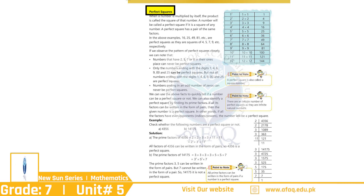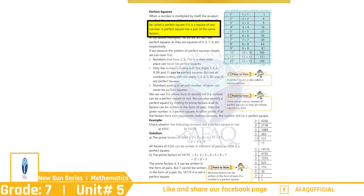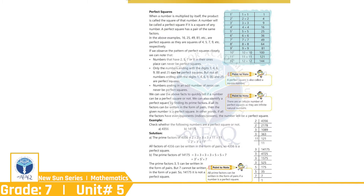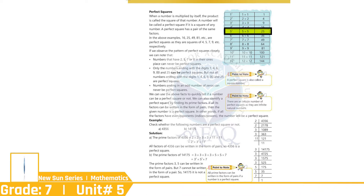Perfect Squares. جب بھی ایک نمبر خود سے multiply ہو گا تو ہم اسے Perfect Square کہیں گے۔ Perfect Square کے factors کا جوڑا سیم ہو گا۔ مثال کے طور پر: 2 کا square 4، 3 کا square 9، 4 کا square 16، 5 کا square 25۔